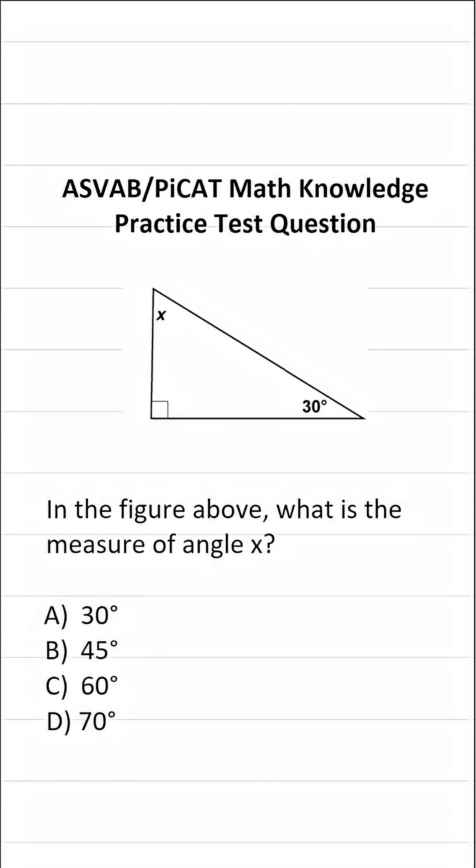So in order to answer this one, you have to know that all the angles in a triangle will always add up to 180 degrees. That's called the triangle sum theorem.